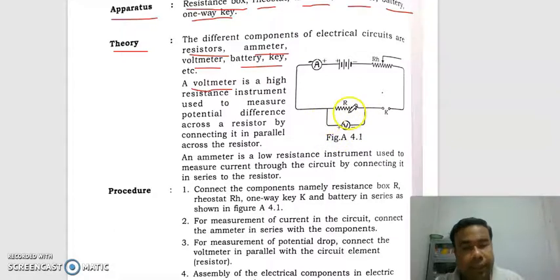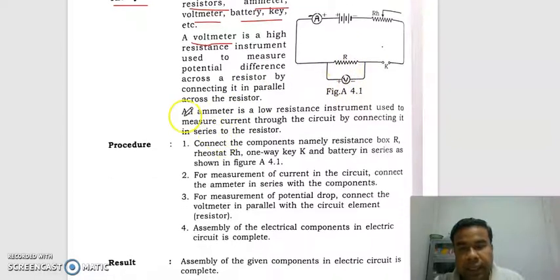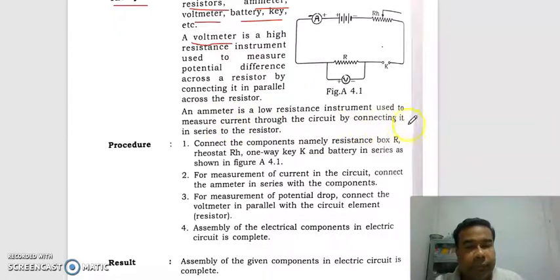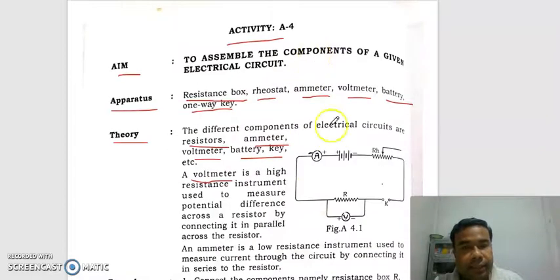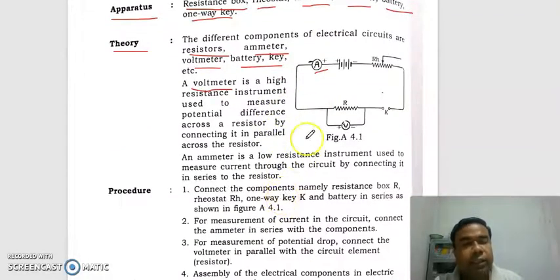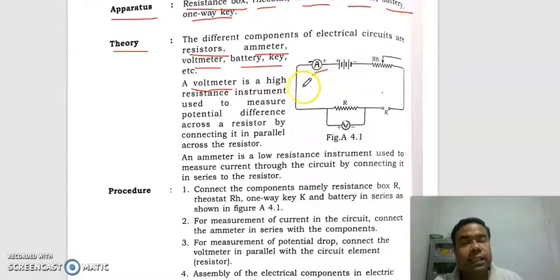Volumeter is connected in parallel. And emitter is a low resistance instrument used to measure current through the circuit by connecting it in series to the resistor. So emitter is a low resistance instrument which measures the flow of current through the circuit, so emitter is always connected in series to the circuit.